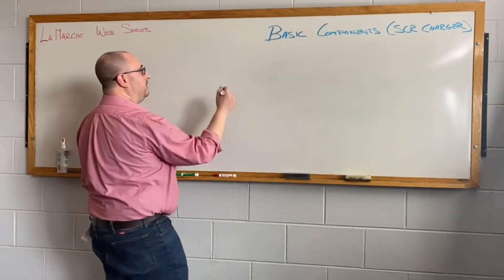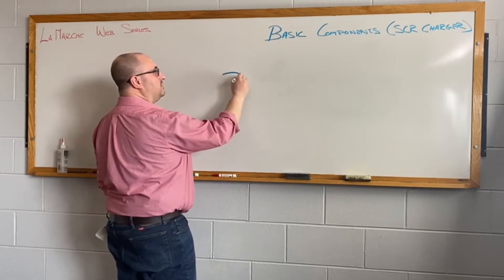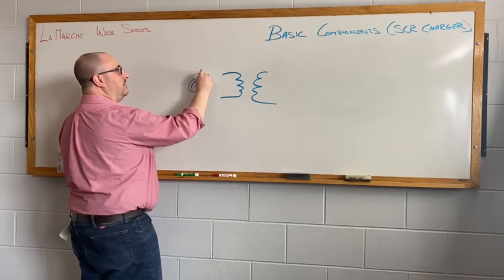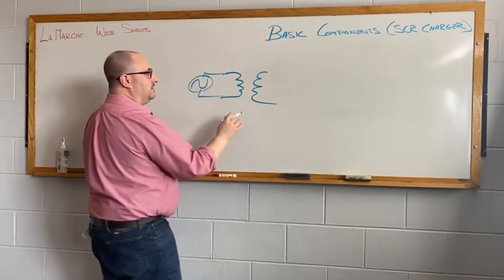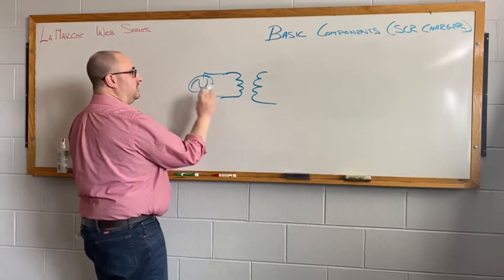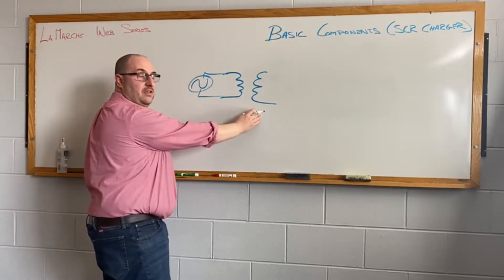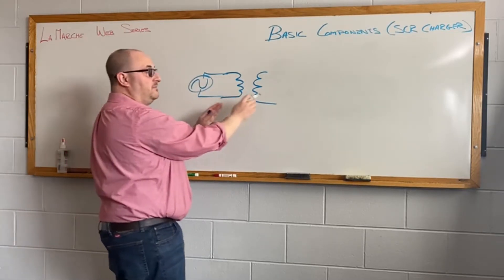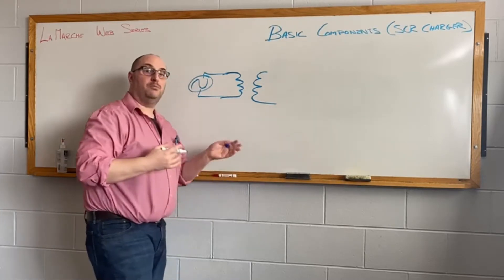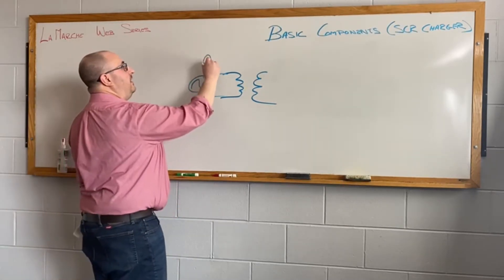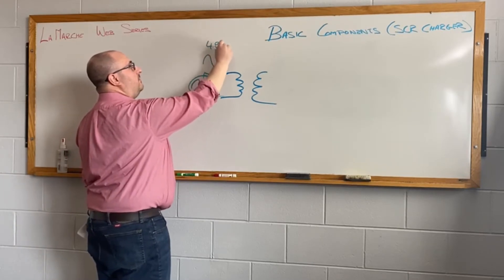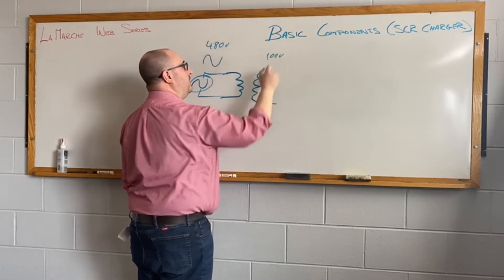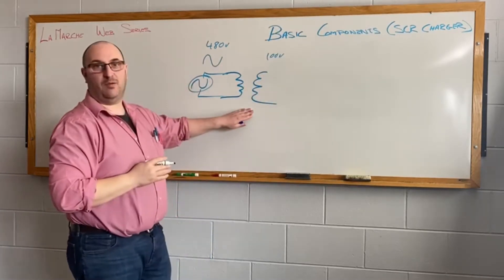Any SCR type battery charger in this market space is going to start out with a simple power transformer that we're going to connect an AC input voltage to. The job of the transformer is going to be to provide isolation from the primary to the secondary side and also to adjust the voltage of the primary down to the secondary voltage that we need for your particular battery size. You may have an AC voltage here that's 480 volts where you might need to step it down to, say, 100 volts. That's the job of the transformer.